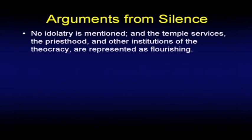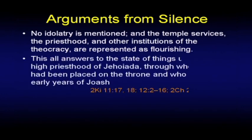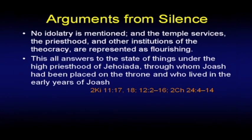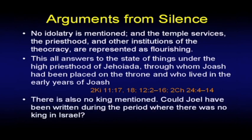No idolatry is mentioned. However, the temple services, the priesthood, and other institutions of the theocracy are represented as flourishing. This all answers to the state of things under the high priesthood of Jehoiada, through whom Joash had been placed on the throne and who lived in the early days of Joash. Now there's another dimension — there's no king mentioned. It's possible that Joel may have written during the period there was no king in Israel.